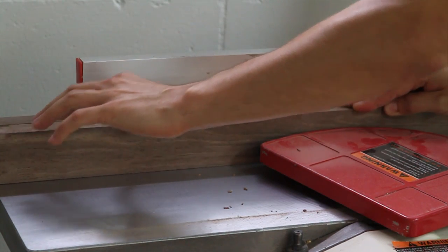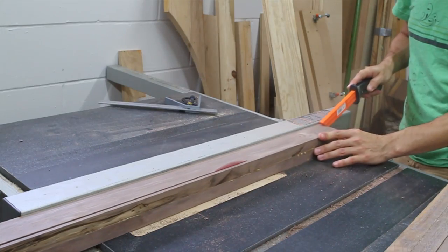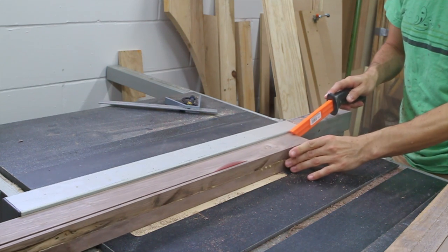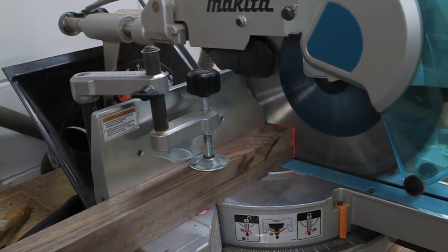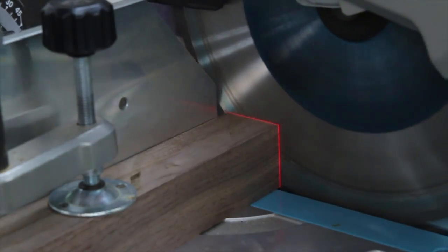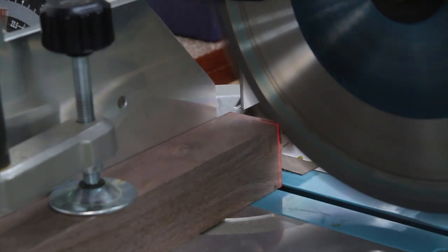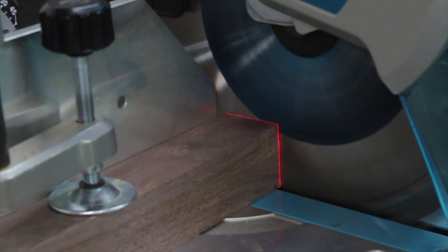Now, back to the legs. I'll clean up and square up two faces and use a table saw to rip them into square stock. And then I cut them to length with the miter saw.